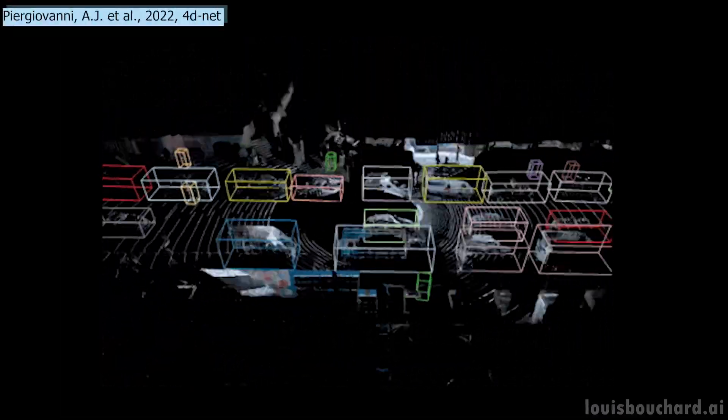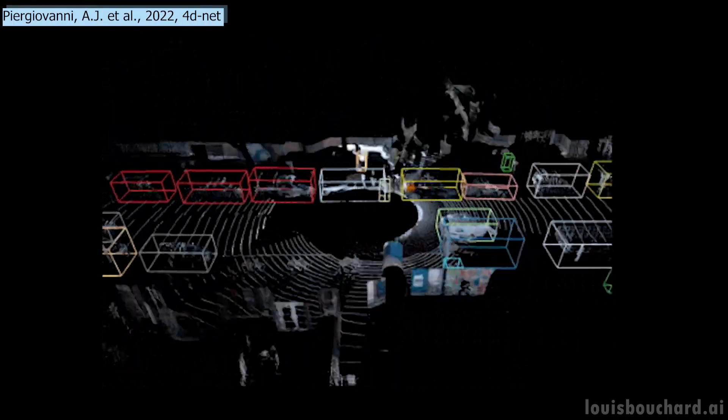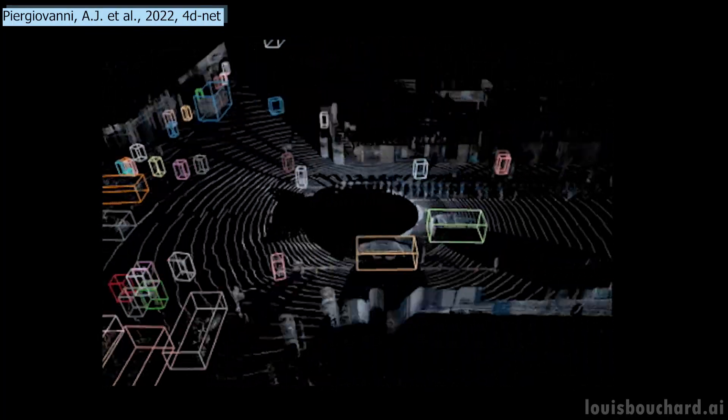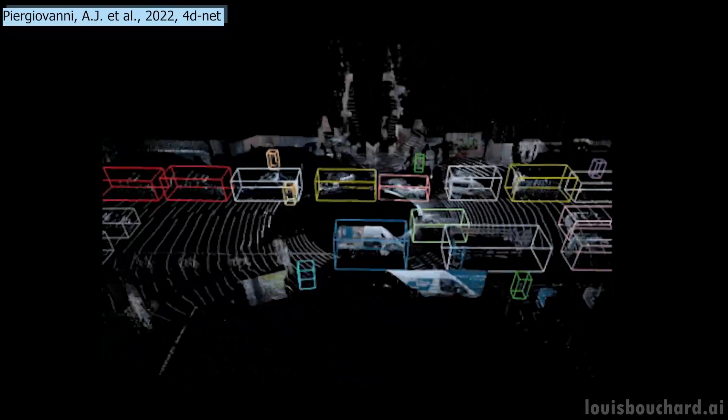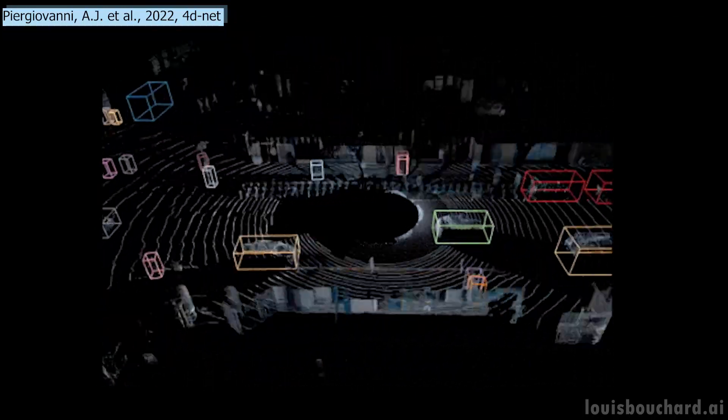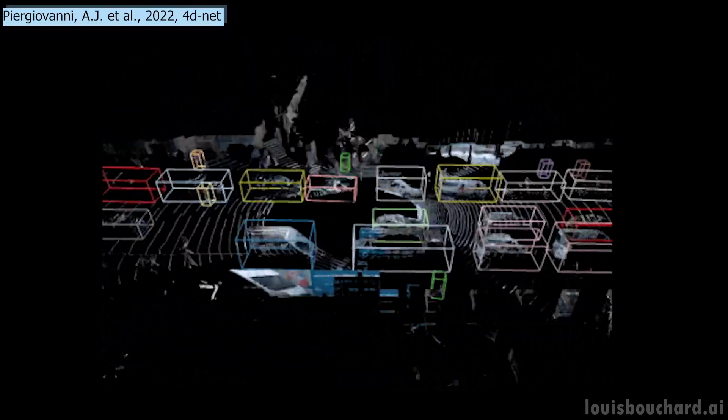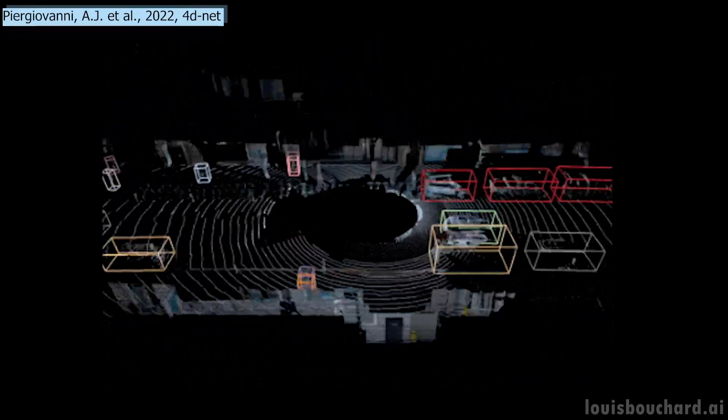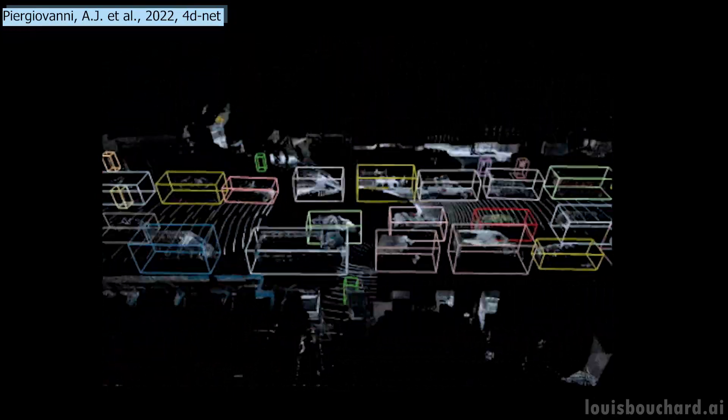This is what the 3D object detection we are talking about looks like. And it's also what the car will end up seeing. It's a very accurate representation of the world around the vehicle with all objects appearing and precisely identified. How cool does that look? And more interesting, how did they end up with this result?